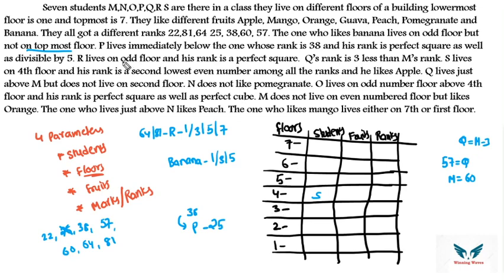S's rank is the second-lowest even number among all ranks. The even numbers are 22, 38, 60, 64 — second lowest is 38, so S's rank is 38 and S likes apple. Since P lives immediately below the person with rank 38 (which is S on floor 4), P is on floor 3. Q lives just above M.